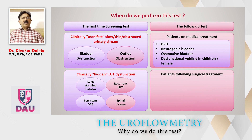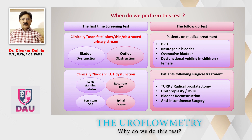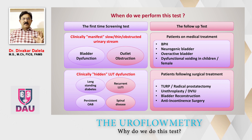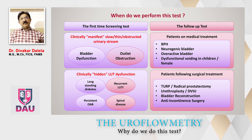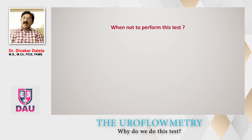Uroflowmetry is also used as a follow-up test after surgical treatment of the lower urinary tract to assess outcomes. Common examples include transurethral resection of the prostate, radical prostatectomy, urethroplasty, direct vision internal urethrotomy, bladder reconstruction surgery, and anti-incontinence sling surgeries in females and males. Comparing tests over time provides documentary evidence of how the disease is progressing or whether surgical success is being maintained.